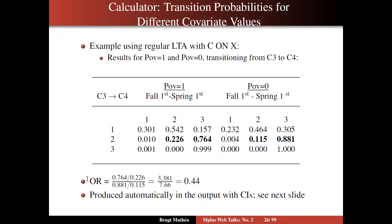The odds ratio here — rather than just odds — reflects the relationship between two variables: how the poverty covariate influences a transition. The odds of moving for those in poverty is 0.764 divided by 0.226, giving 3.381. For those not in poverty, the odds is 0.881 divided by 0.115, which is 7.66. So the odds ratio is 3.381 divided by 7.66, which equals 0.44 — a low odds ratio, meaning the odds is 0.44 times lower for poverty equals one than for poverty equals zero.